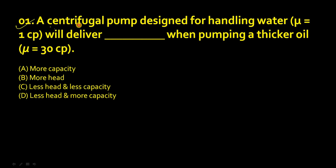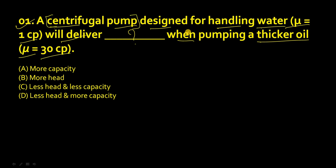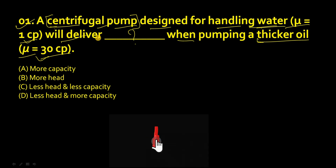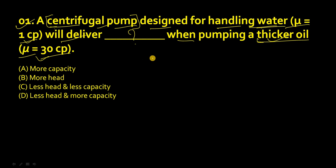The first question: a centrifugal pump is designed for handling water with viscosity of 1 centipoise. If it will deliver oil that has a viscosity of 30 centipoise, then what will happen? So earlier we were handling water in the centrifugal pump, now we have to handle thicker oil with higher viscosity than water.